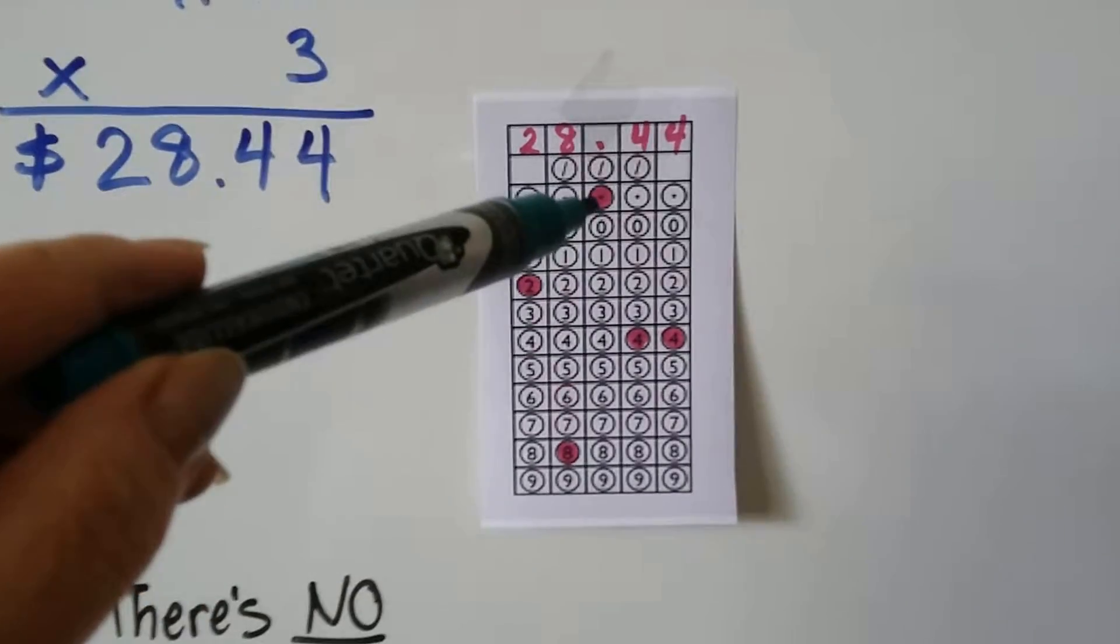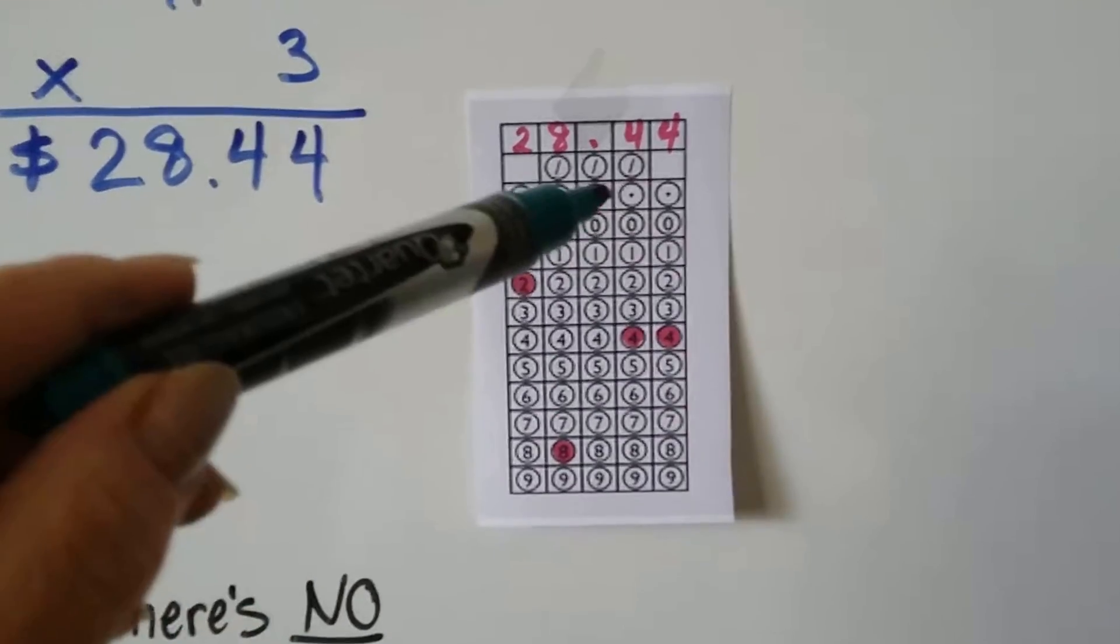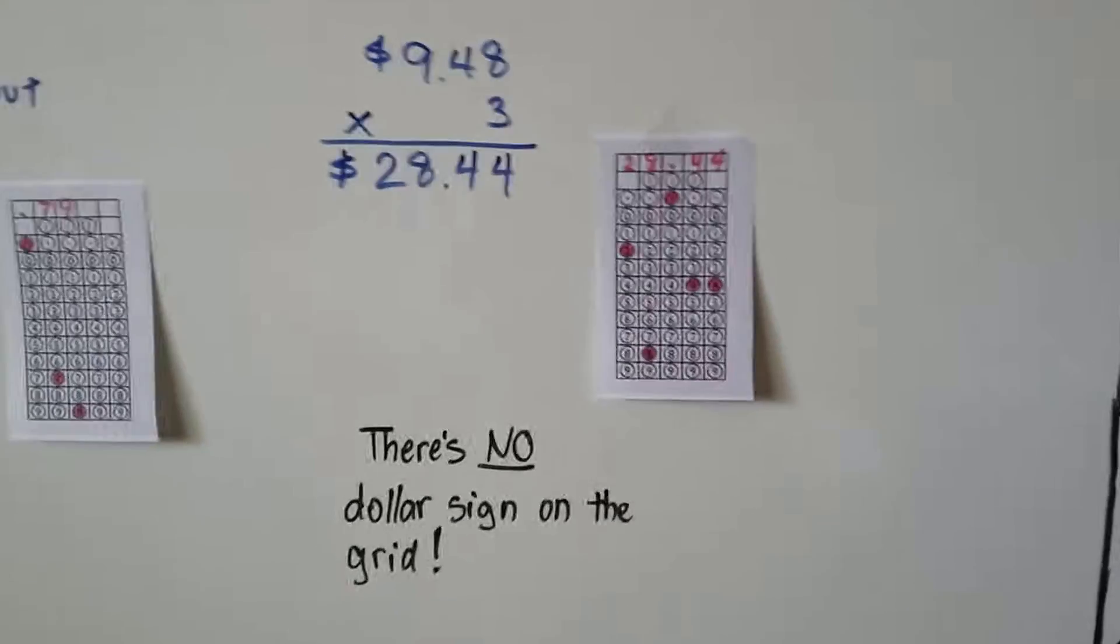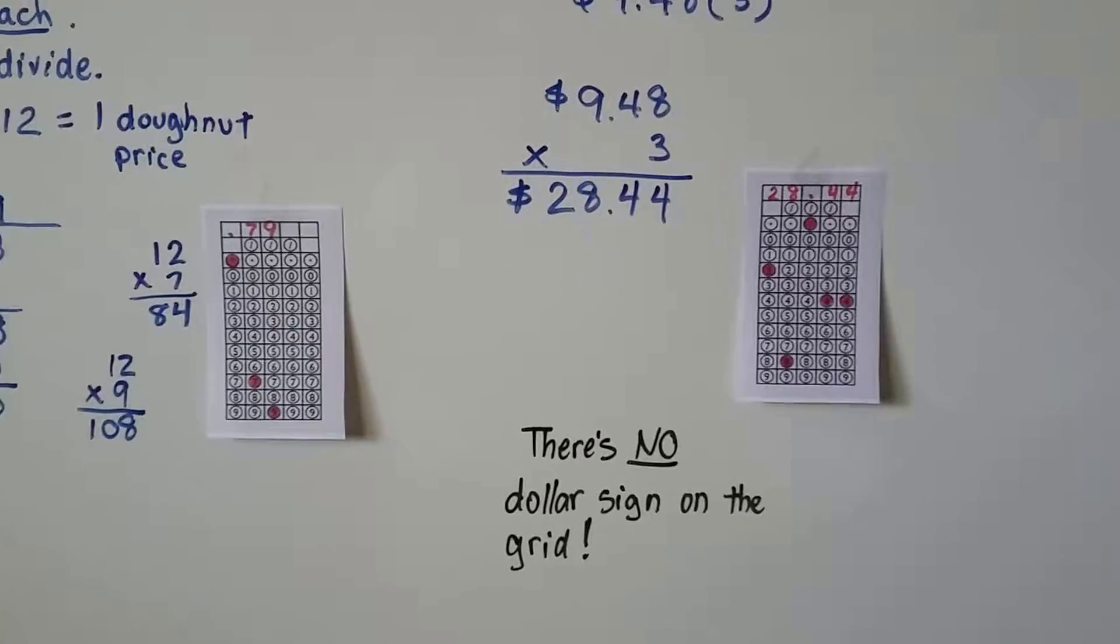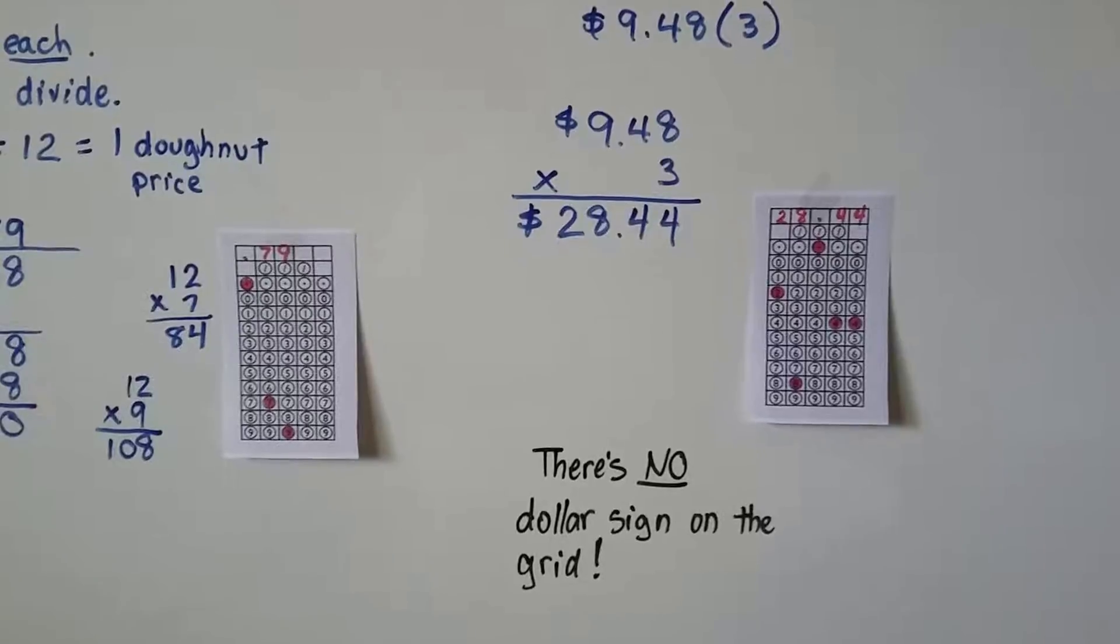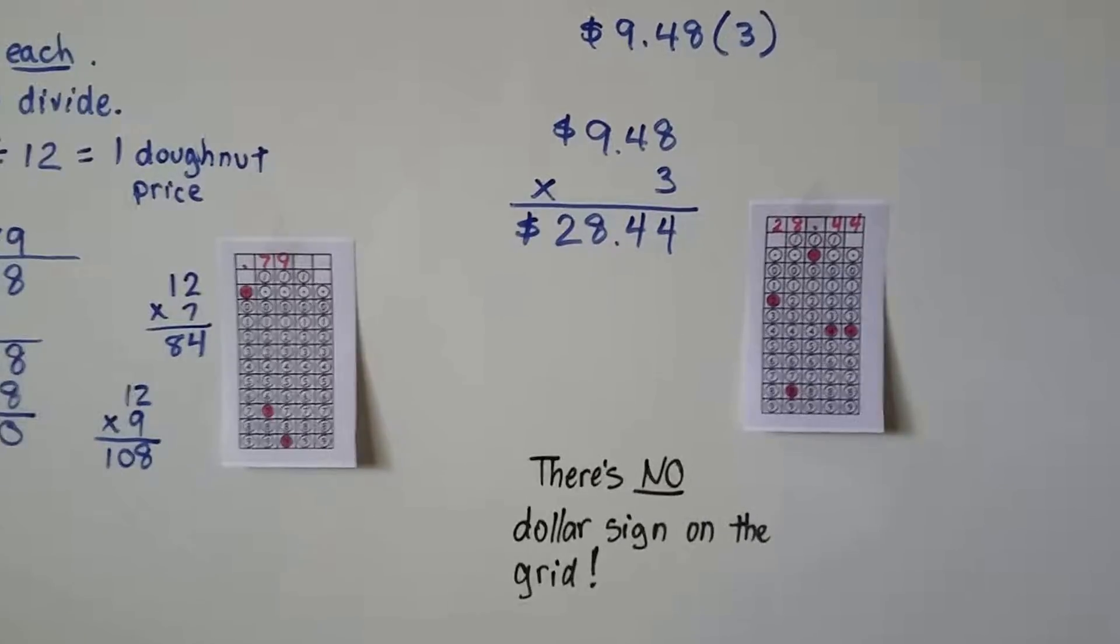We fill in the 2 circle, the 8 circle, the decimal point circle, and the 4 and the 4. Don't forget that decimal point. You don't want to make a mistake and over a silly decimal point, you end up not passing the test.